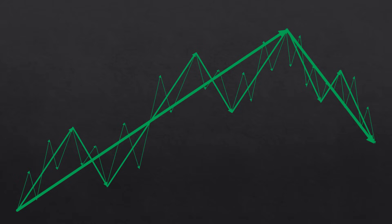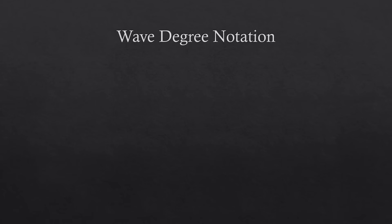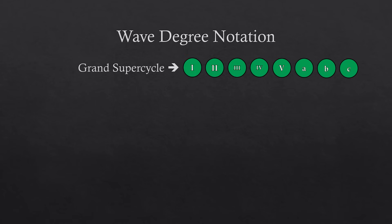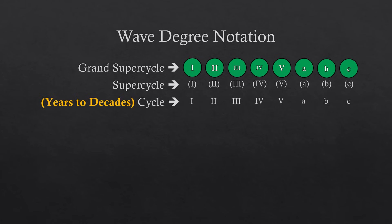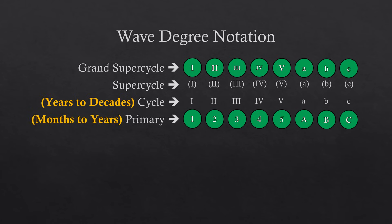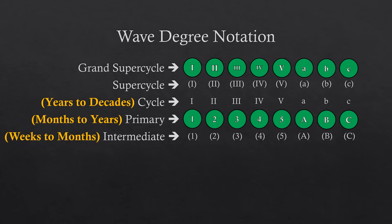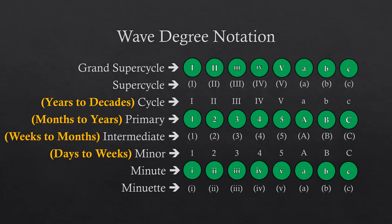According to the Elliott Wave Theory, there are nine wave degrees with a labeling convention to keep things organized. The largest cycle is called the Grand Super Cycle, then the Super Cycle, the Cycle spanning years to decades, the Primary Degree spanning months to years, the Intermediate Degree spanning weeks to months, the Minor Degree spanning days to weeks, the Minute Degree, the Minuet, and finally the Subminuet Degree. Trying to keep track of all nine wave degrees is not productive. Keeping track of three wave degrees is already a challenge, as there can be multiple possible wave counts at each degree.